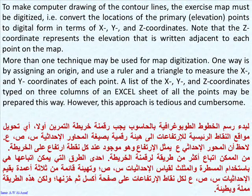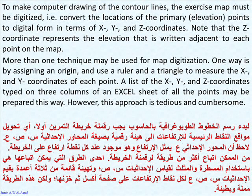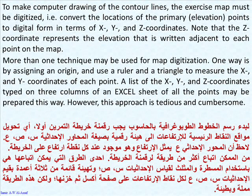To make computer redrawing of the contour lines, the Exercise Map must be digitized, that is to say convert the locations of the primary points to digital form in terms of X, Y, and Z coordinates. Note that the Z coordinate represents the elevation, and it is written adjacent to each point on the map. More than one technique may be used for map digitization. One way is by assigning an origin and using a ruler and a triangle to measure the X and Y coordinates of each point. A list of the X, Y, and Z coordinates typed on three columns of an Excel sheet of all the points may be prepared this way.